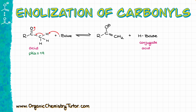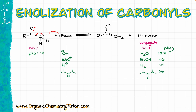The pKa for a typical carbonyl is going to be somewhere around the vicinity of 19, give or take. When it comes to our base, that depends on the base and the conjugate acid that it makes. Typically, we are going to see several different bases like hydroxide, ethoxide maybe, hydride is a very common base, and something like LDA. All these are going to give us different conjugate acids with different pKa values.